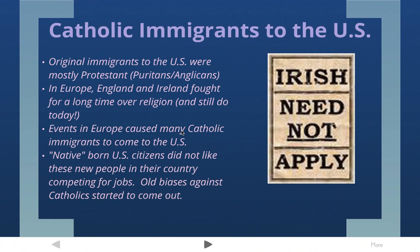Most everyone was of English descent and of the Protestant faith. But starting in the early 1800s, many thousands of people of the Catholic faith started coming to the United States. The reason for this was that in Ireland there was the potato famine, which caused a lot of hunger — people were dying and there was no food to eat, so they were leaving the country. Many thousands came to the United States, and many German Catholics also emigrated at this time.